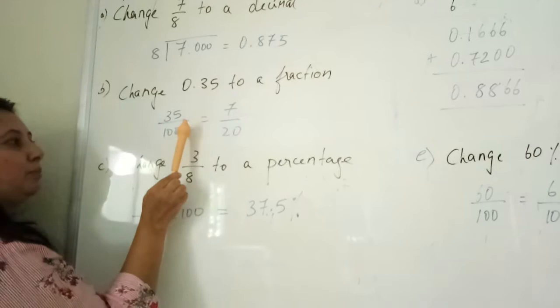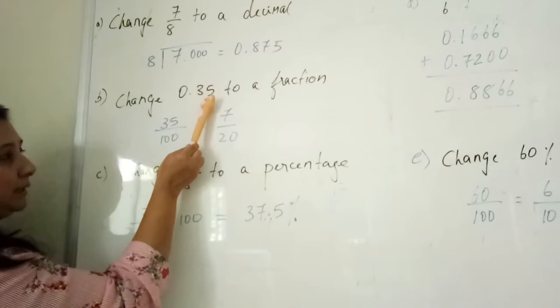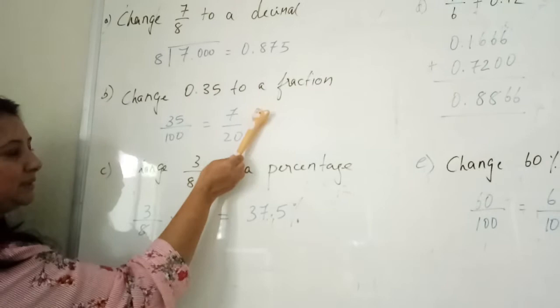So in this case, this becomes 35 divided by 100. Simplify it, so 7 over 20.